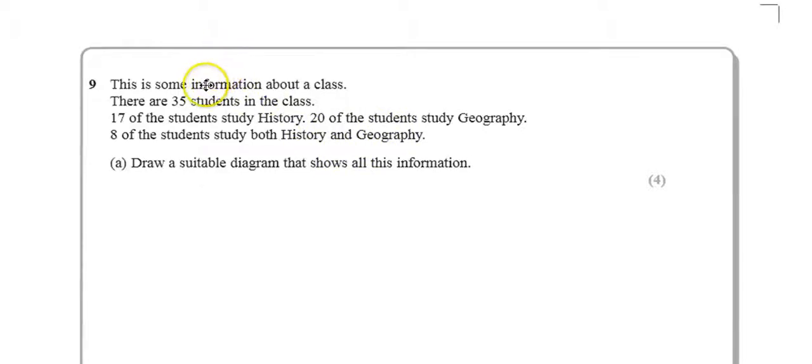Okay, question 9. This is a non-calculator paper, and it gives us some information here. It says there are 35 students in a class, 17 study history, 20 geography, 8 study both. Draw a suitable diagram.